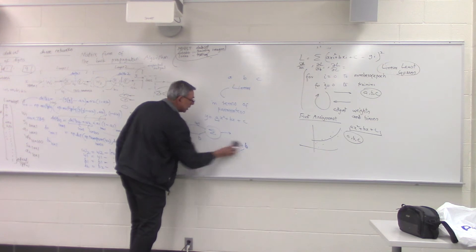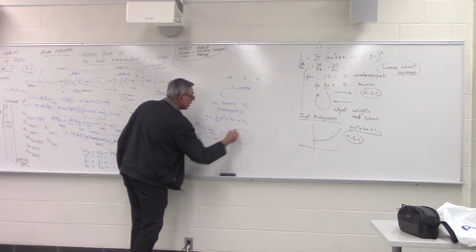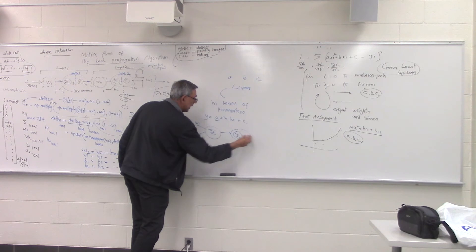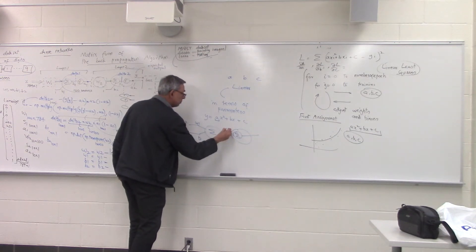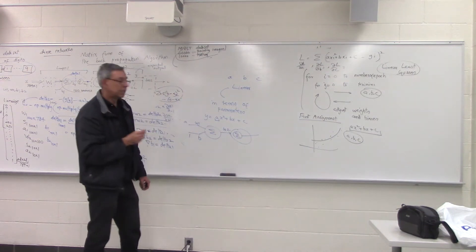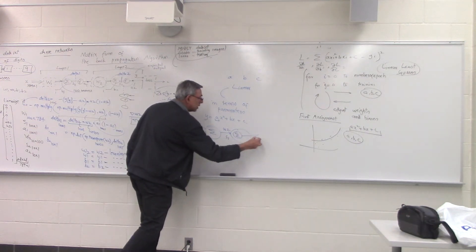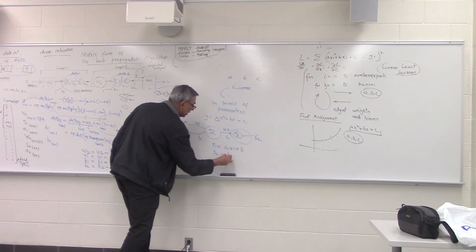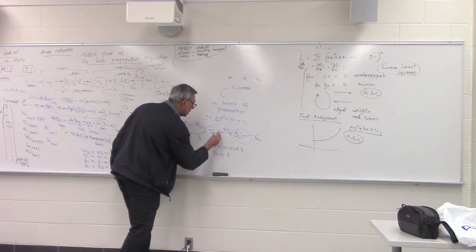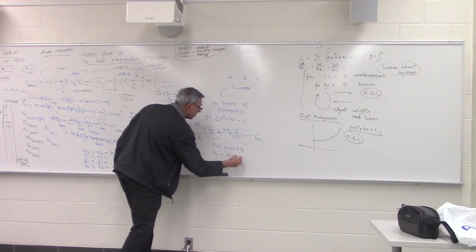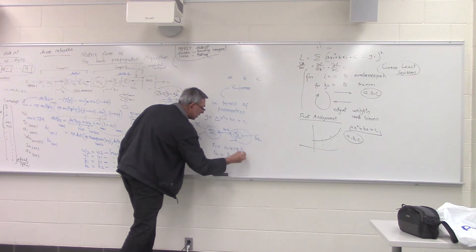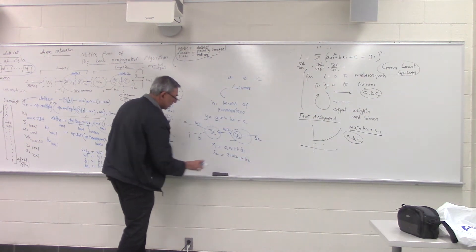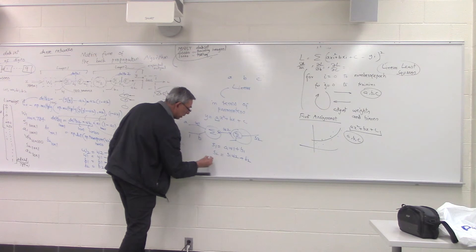Now suppose we pass it through two neurons. So suppose this is W2 over here. Now take a look. S1 will be AW1 plus B1. S2 will be W2S1 plus B2. So if I plug in S1, what happens to S2?